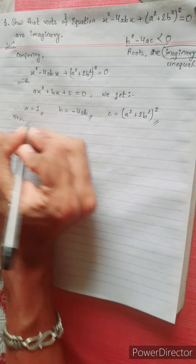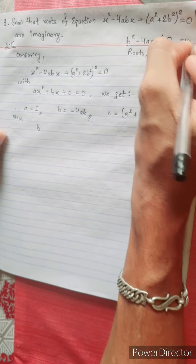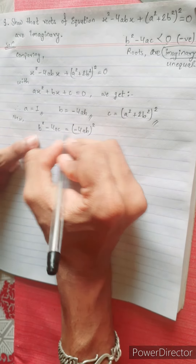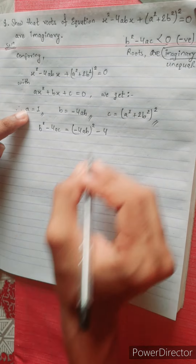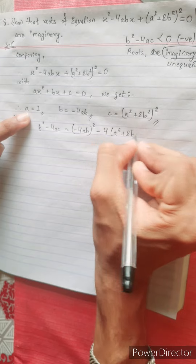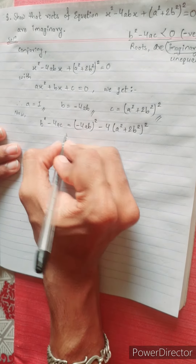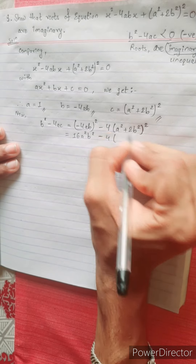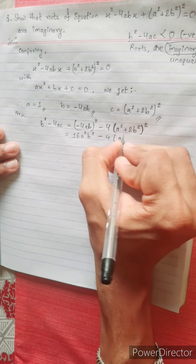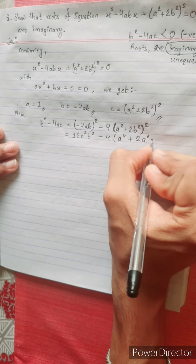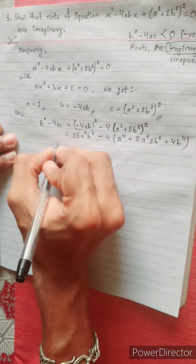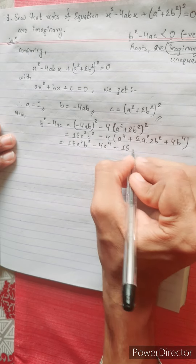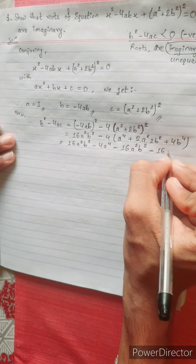Now, b squared minus 4ac — we need this to be a negative value. B squared minus 4ac equals: (minus 4ab) squared minus 4 times 1 times (a squared plus 2b squared). This gives 16a squared b squared minus 4 times (a squared plus 2b squared), which expands to 16a squared b squared minus 4a to the power 4 minus 16b to the power 4.